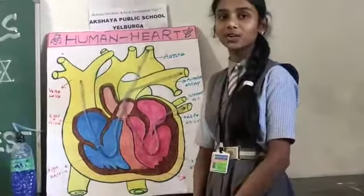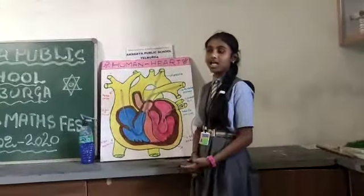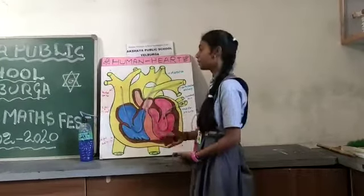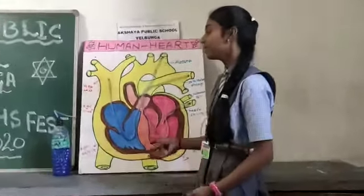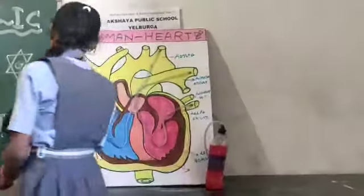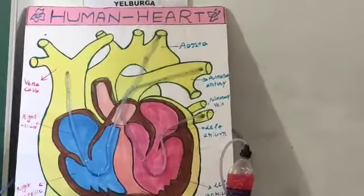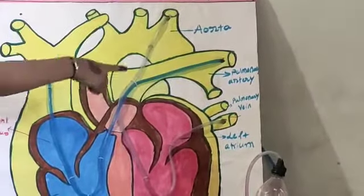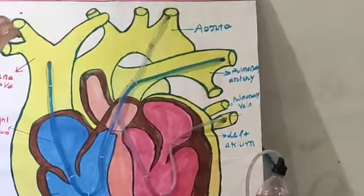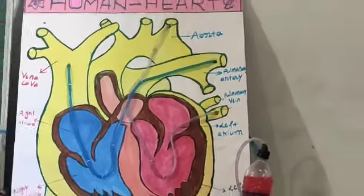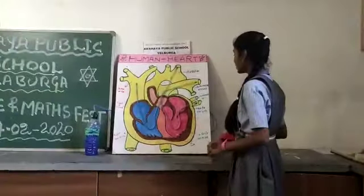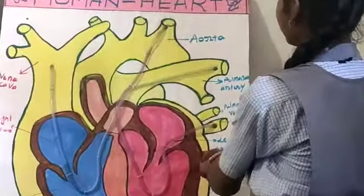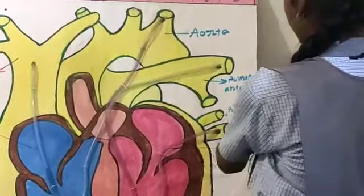The heart circulates blood through 2 pathways: the pulmonary circuit and the systemic circuit. In the pulmonary circuit, the deoxygenated blood leaves the right ventricle of the heart via the pulmonary arteries and travels to the lungs. Then the oxygenated blood enters the left atrium of the heart via the pulmonary veins.